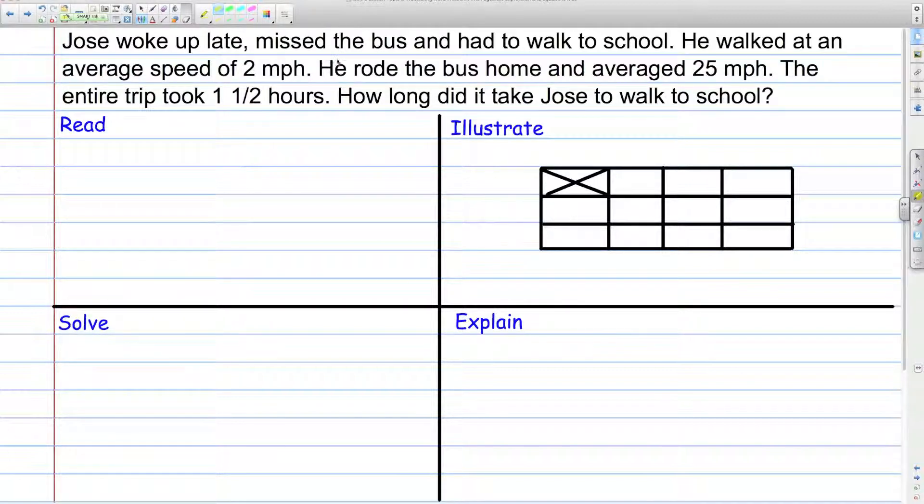So we read the problem. So let's think about some important information. And the first piece of important information is the actual question. And that's right here. And it's pretty easy to tell what the question is if there's a question mark. Sometimes the question can be stated without a question mark. But the question is, how long did it take Jose to walk to school? And what I meant by on the previous slide was to actually write it down. I want us to write the question down. How long did it take Jose to walk to school? How long to walk to school? That's the question.